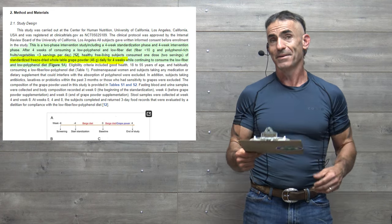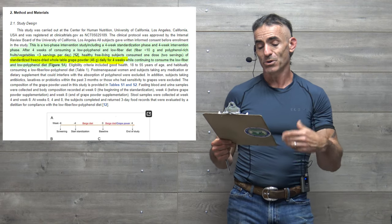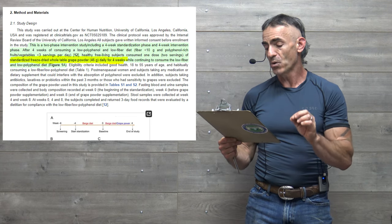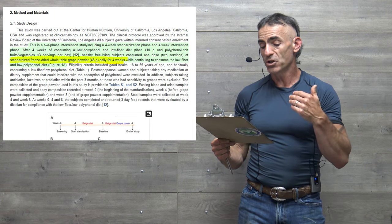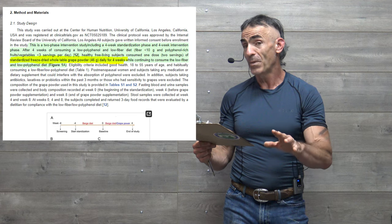Less than three servings of fruits and vegetables. Healthy, free living subjects consumed one dose or two servings of standardized freeze-dried whole table grapes, about 46 grams, daily for four weeks while continuing to consume the low fiber and low polyphenol diet.